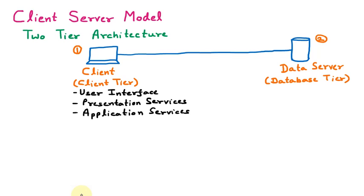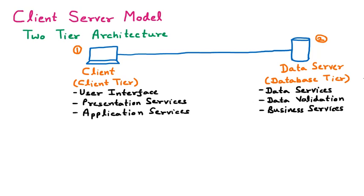In the database tier we have three features: data services, data validation, and business services. Data services refers to how the database is connected and what type of database is used, such as Oracle or SQL, and what tables they contain. Data validation means verifying that the data is correct. Business services means giving the proper information to the proper person.